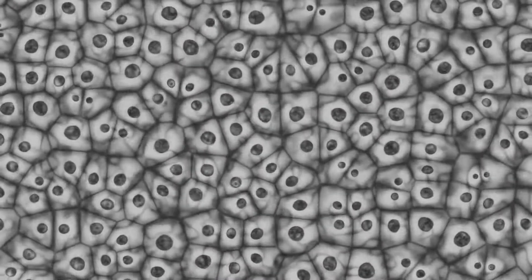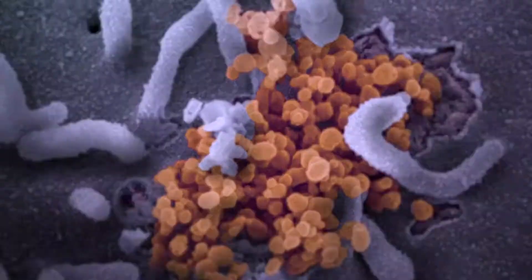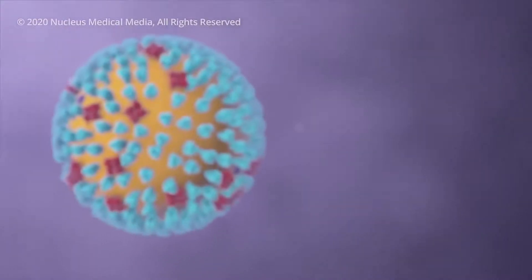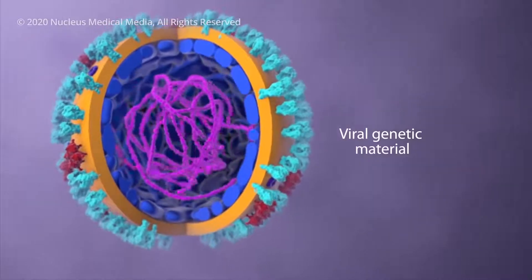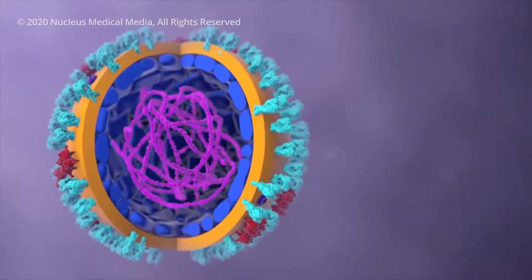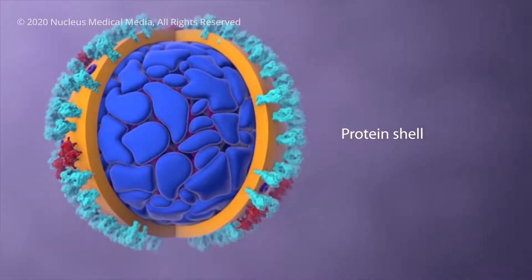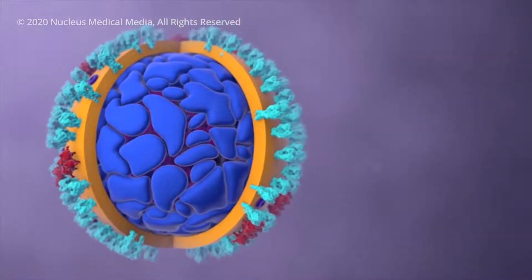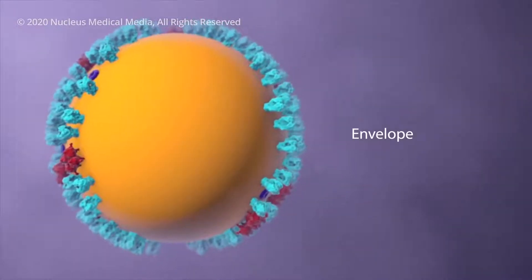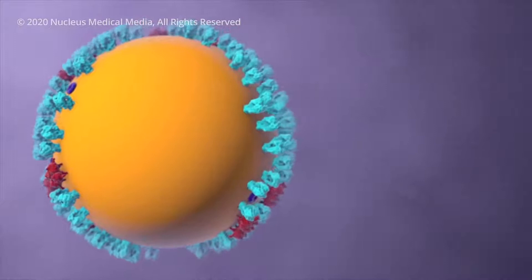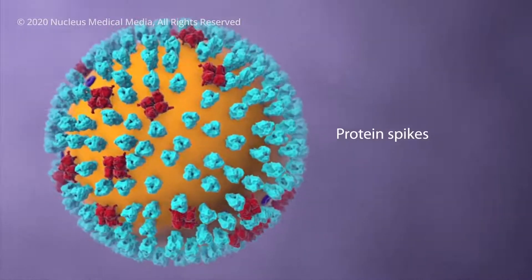The coronavirus must infect living cells in order to reproduce. Let's have a closer look. Inside the virus, genetic material contains the information to make more copies of itself. A protein shell provides a hard protective enclosure for the genetic material as the virus travels between the people it infects. An outer envelope allows the virus to infect cells by merging with the cell's outer membrane. Projecting from the envelope are spikes of protein molecules.